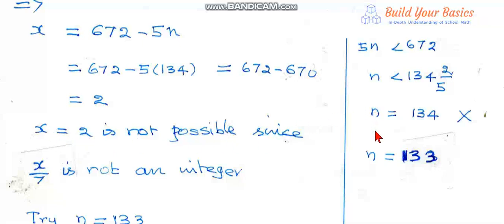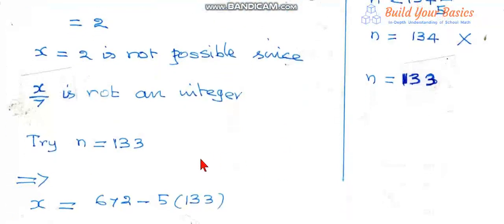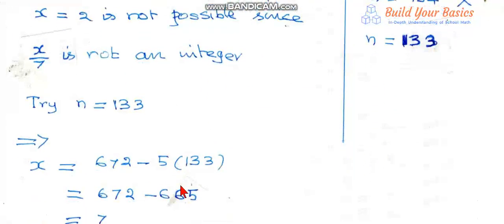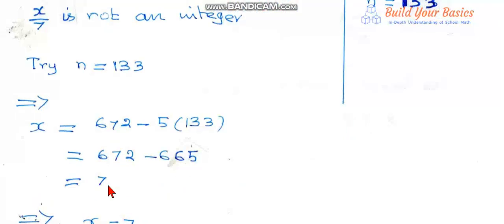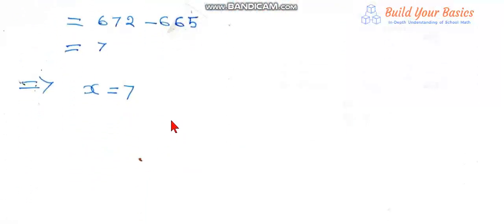Let us take the next value 133. We must take a lower value because n must be less than 134.4. We have already taken n equal to 134, that is not possible. Therefore we take the next lower value 133. When we try n equal to 133, x equal to 672 minus 5 into 133, so we get x equal to 7.